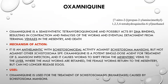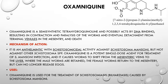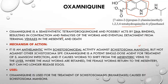The next drug is oxamniquine, a tetrahydroquinoline derivative. The ring is saturated, making it a semi-synthetic tetrahydroquinoline. It acts by DNA binding, resulting in contraction and paralysis of the worms. It acts on Schistosoma mansoni specifically — the male worms located in the mesenteric veins near the liver. By binding to DNA, it creates contraction and paralysis. Oxamniquine is used for the treatment of schistosomiasis caused by Schistosoma mansoni.